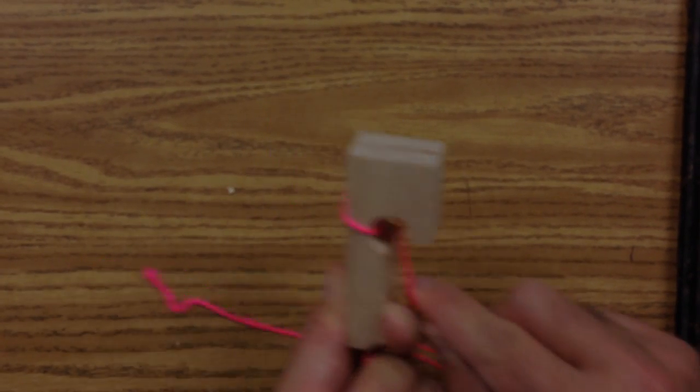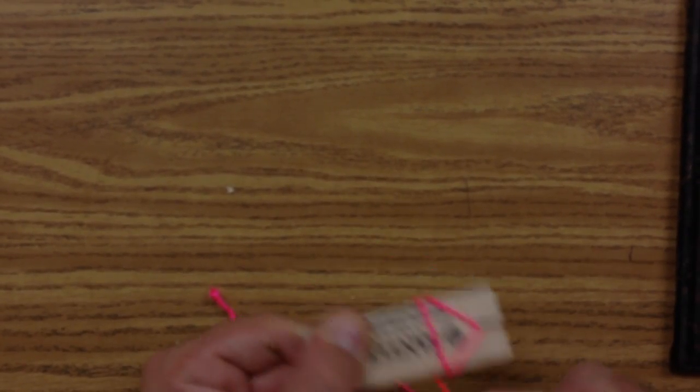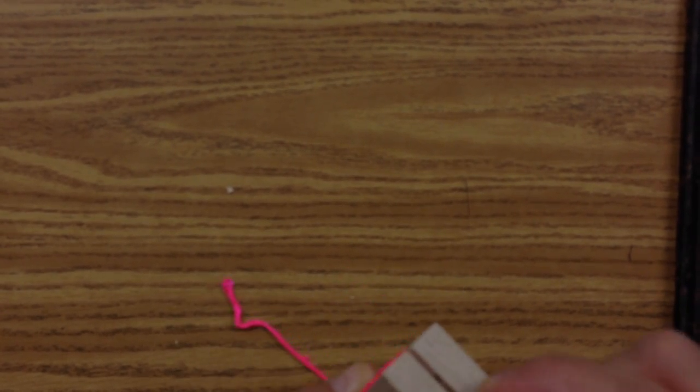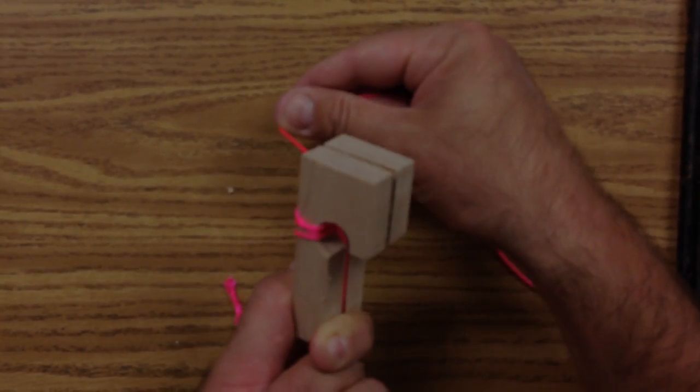So it's like a V shape. Wrap it around once. Wrap it around twice. And you pull it through on the other end.